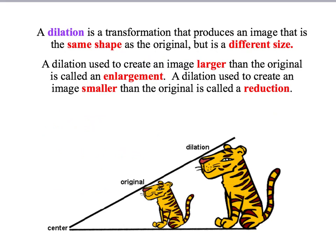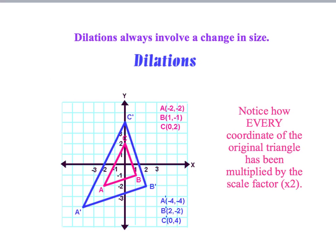A dilation is basically when you enlarge the original object to create a much bigger image. For this example we can see that the original object, which is the red or pink triangle, is the exact same shape as the new image which is the blue triangle. It's just that the image has been made much larger.